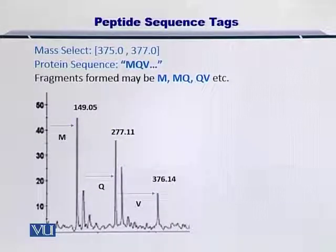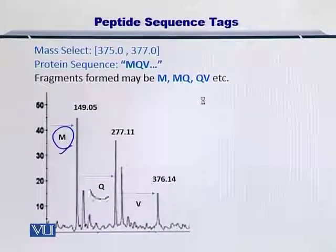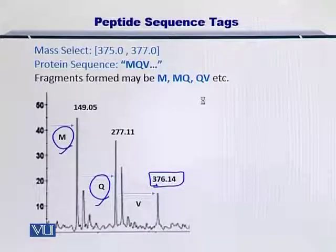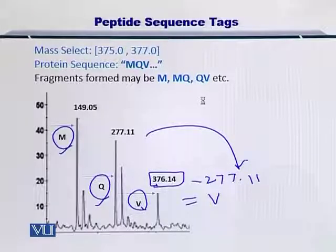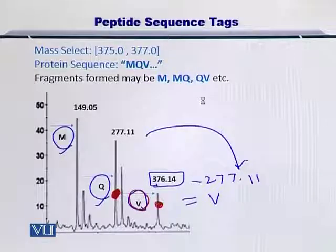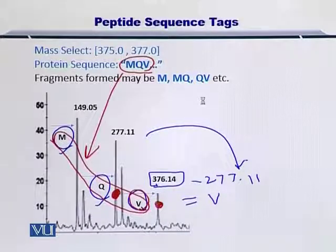There is a third peak. Up till now, you know there was a methionine and a Q. Now you have another peak at 376.14. If you subtract 277.11 from it, you arrive at the molecular weight of valine, V. So using the same approach repeatedly — subtracting this peak from this peak — you arrive at V. You will notice that you are already forming the sequence of the protein.